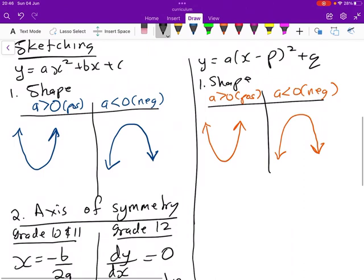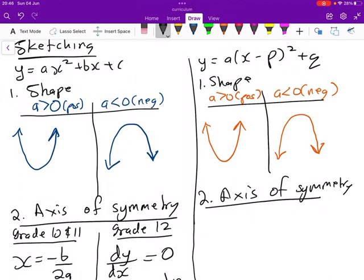But when you look at this one here, the axis of symmetry, you just draw it from the equation. Axis of symmetry. And you'll look at this in much detail. You'll just draw it from the equation. It will just be x is equals to p.